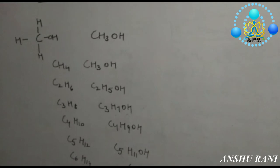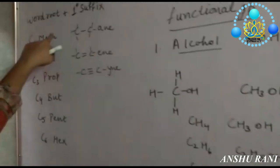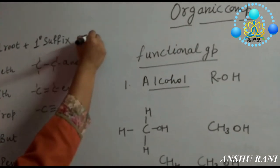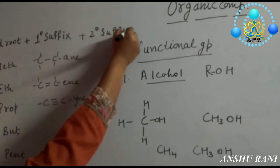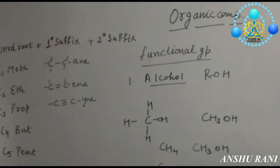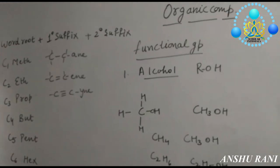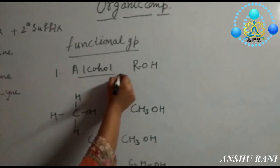Now while writing the names we will use word root, we will use primary suffix along with that we will use secondary suffix. Secondary suffix will tell you which functional group is present in that organic compound. For alcohol group we will write O-L.